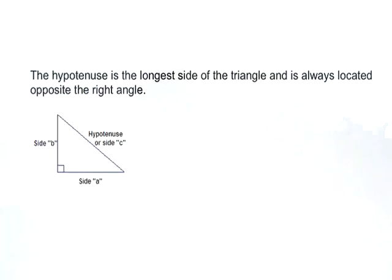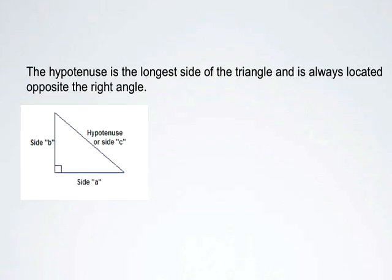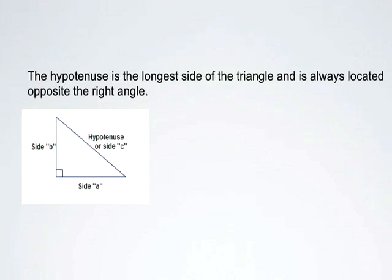In review then, the hypotenuse is the longest side of the triangle and it's located opposite the right angle, and the other two sides are called legs.